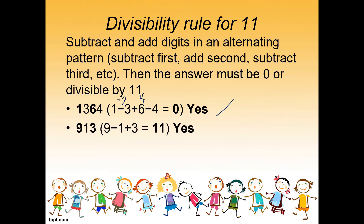Example number 2: 913. So 9 minus 1 equals 8, plus 3 equals 11. Since the answer is 11, which is divisible by 11, 913 is divisible by 11.